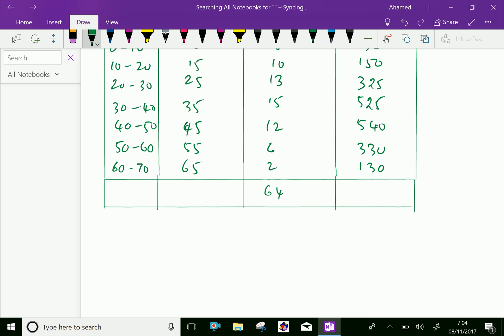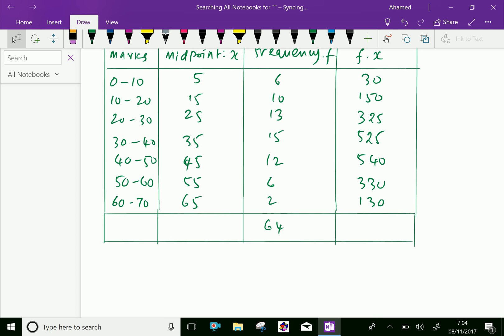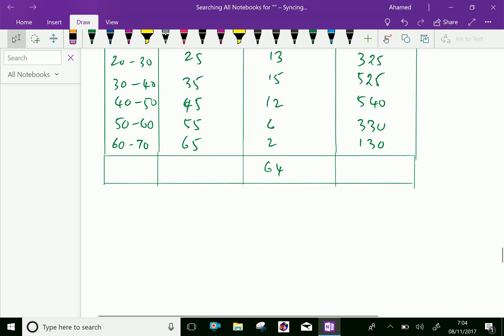Now add this: here, 30 plus 150 plus 325 plus 525 plus 540 plus 330 plus 130 equals 2030.